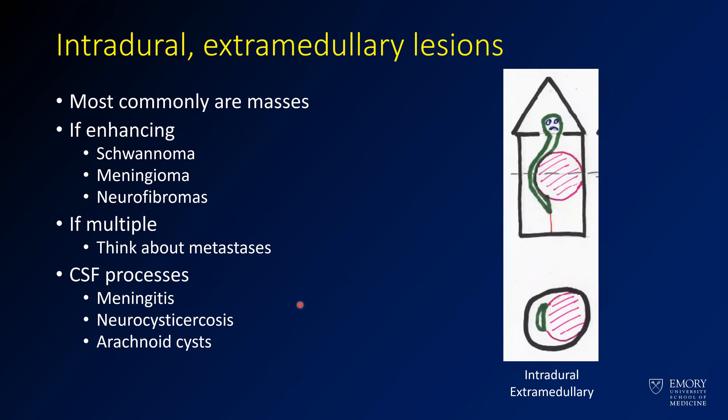Now we move on to things that are not in the cord but are still within the dura — intradural extramedullary lesions. These are most commonly masses. They tend to be schwannomas, meningiomas, and other nerve sheath tumors or neurofibromas. If you have multiple ones, think about metastatic disease.